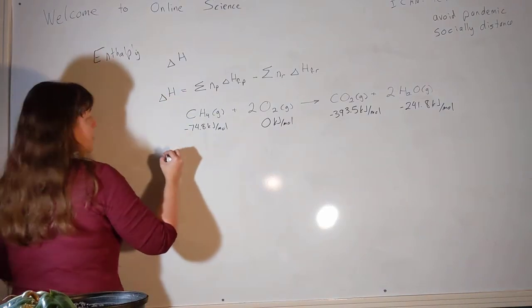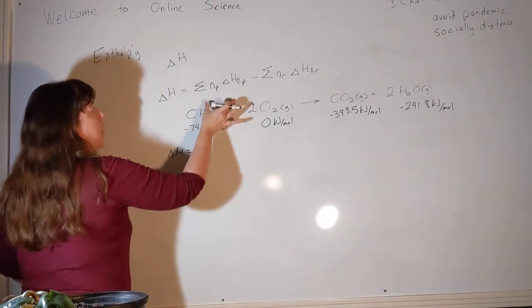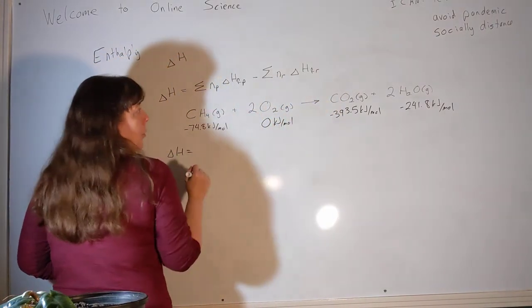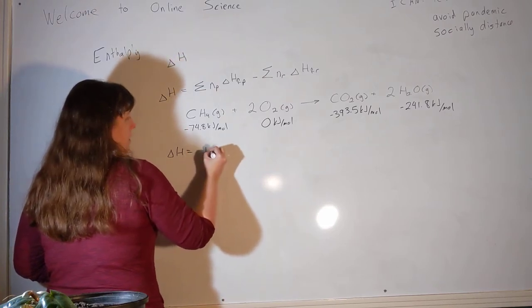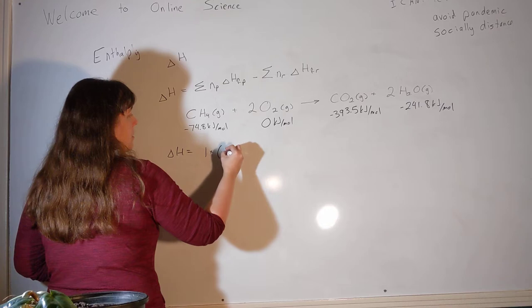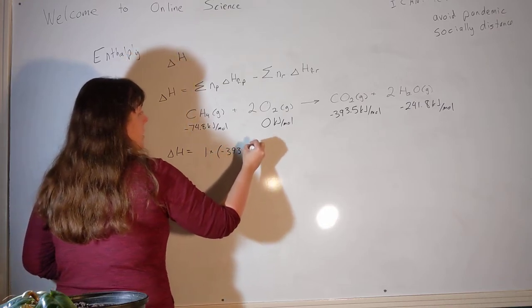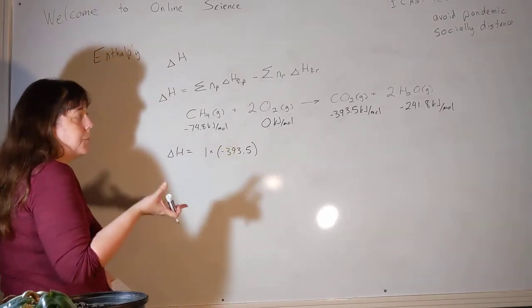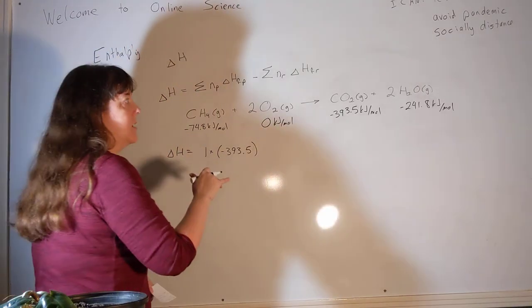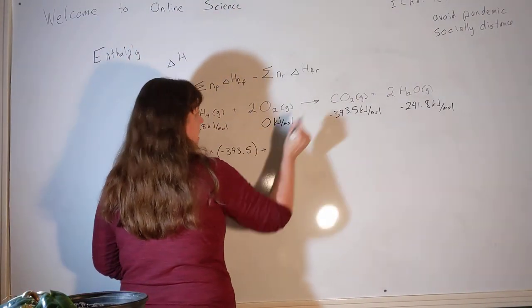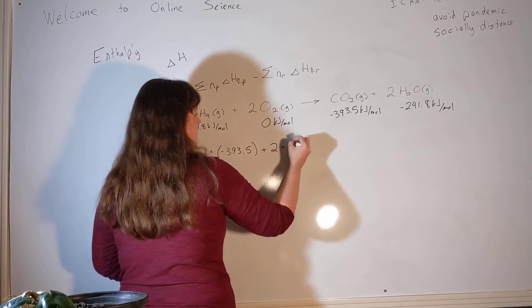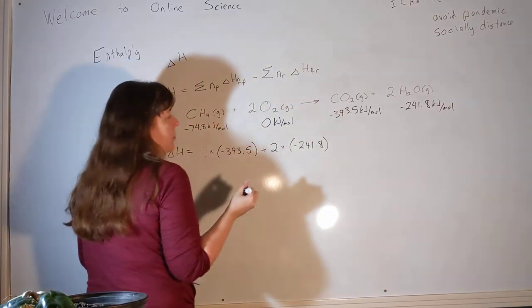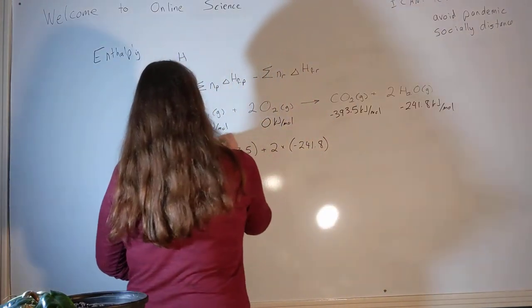All right, now we're ready to find the delta H for this reaction. Delta H is equal to, we're starting with the product side. We always start with the product side when we find delta H. So how many moles of carbon dioxide are there? One times what is its heat of formation? Minus 393.5. I'm going to do a thing I don't often do. I'm going to leave the units off with the numbers right here. I think it's simpler sometimes. We don't get as confused if we have fewer things in the equation to look at. Plus the coefficient for the water is two times. Its heat of formation is minus 241.8. That's also in kilojoules per mole.